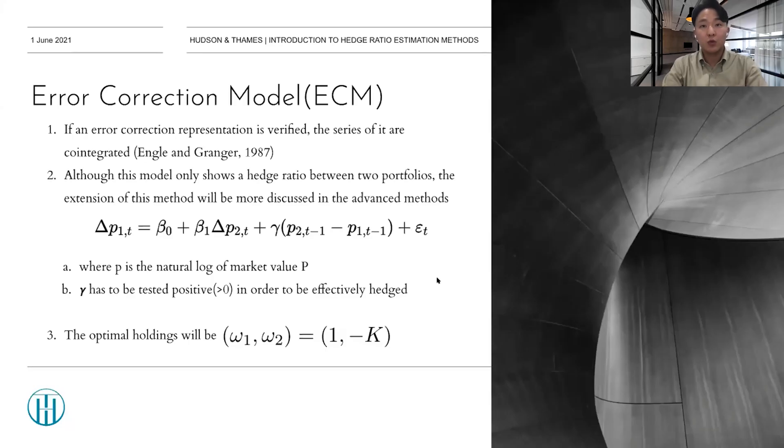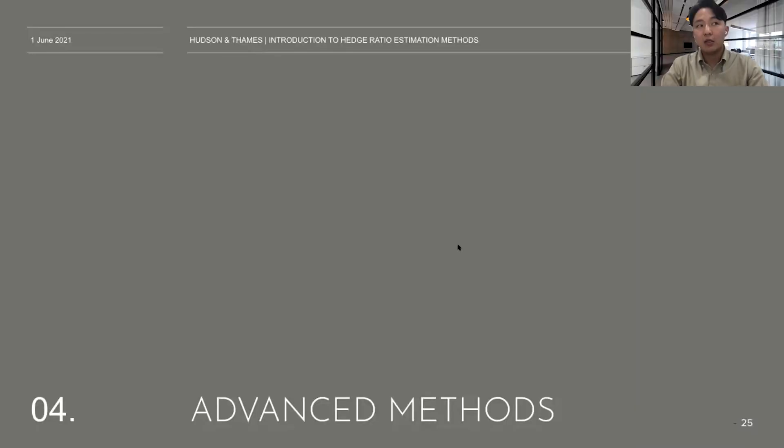Okay, so these were some basic hedge ratio estimation methods that are widely used, just the basic high level concepts of it. And now I present some of the advanced method. And as it is more complicated than the single period and multi-period method, I'll just briefly go through the concepts of it. So if you want to know deeper or if you want to see the whole equations of this advanced method, I recommend to go to the papers I refer in the reference page.